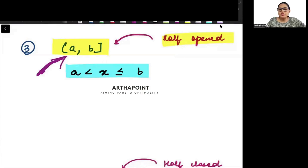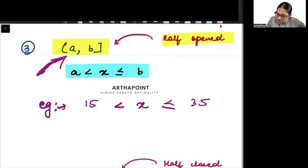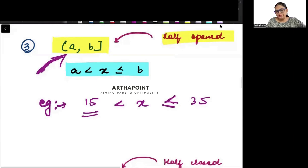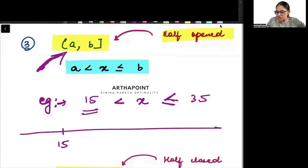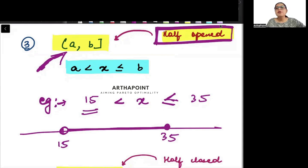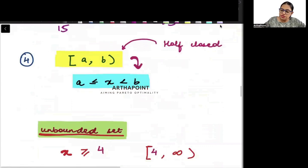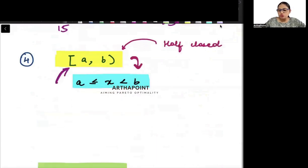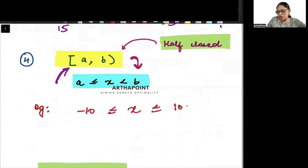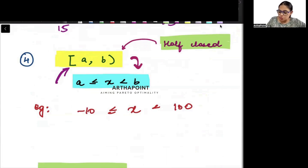The next type is called half-open because it is open from one side. For example, if x is between 15 to 35 and 35 is included but 15 is not included, I draw 15 with an open circle and 35 with a closed circle. This is a half-open interval. The reverse is also true — when the initial part is closed, it is called a half-closed interval. For example, if x is between minus 10 to 100 and minus 10 is included but 100 is not included.